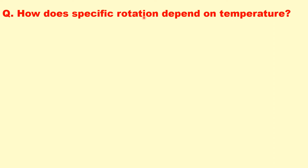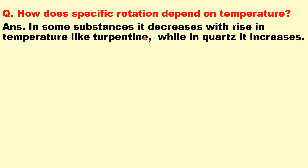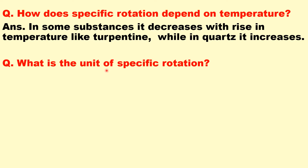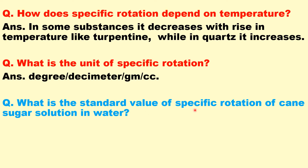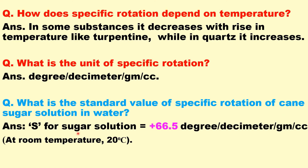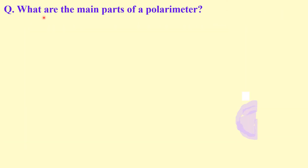How does specific rotation depend on temperature? In some substances it decreases with rising temperature, like turpentine, while in others it increases. What is the unit of specific rotation? It is degrees per decimeter per gram per cc. What is the standard value of specific rotation of cane sugar solution in water? The standard value is +66.5 degrees per decimeter per gram per cc at room temperature.